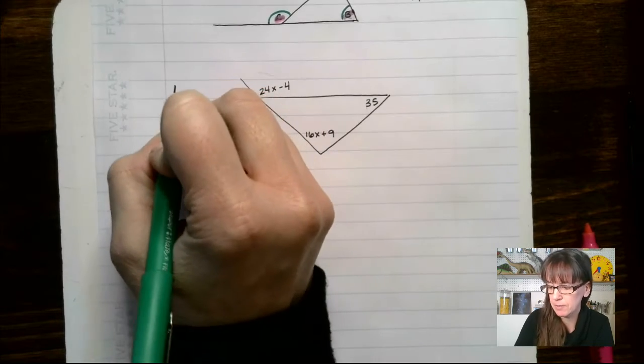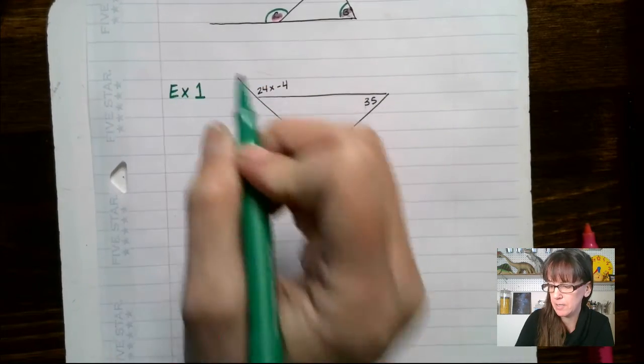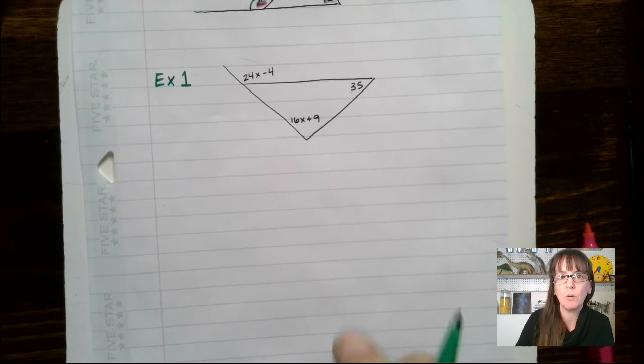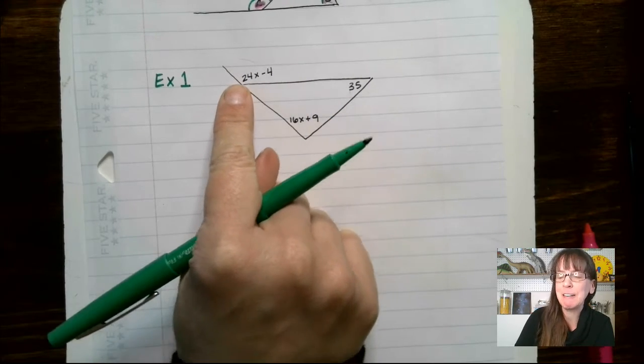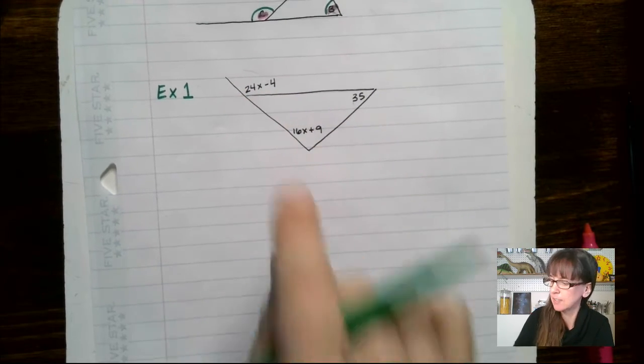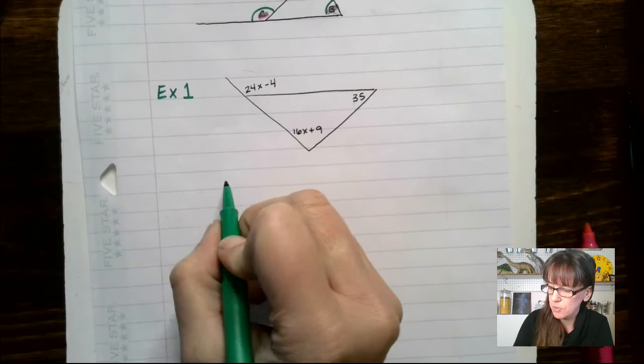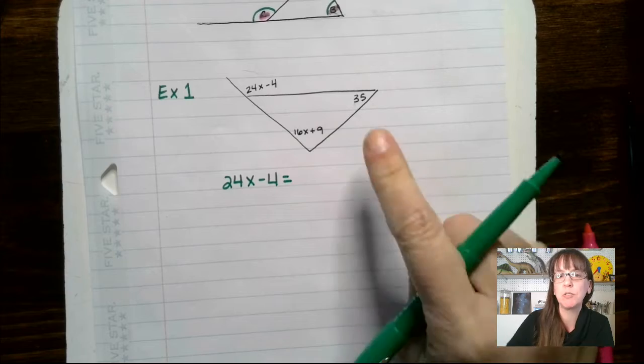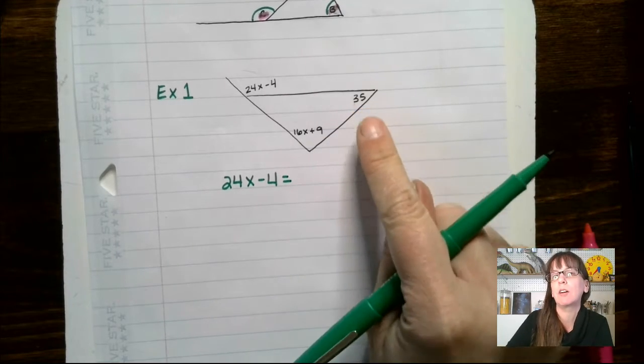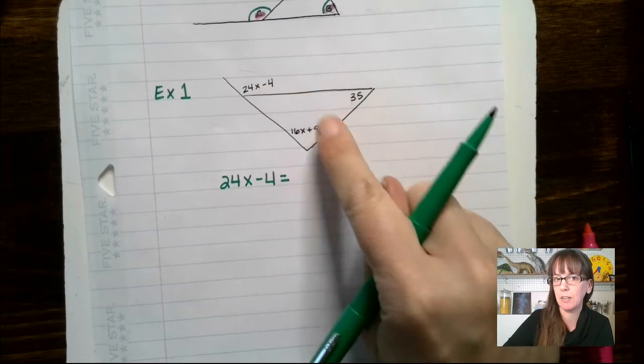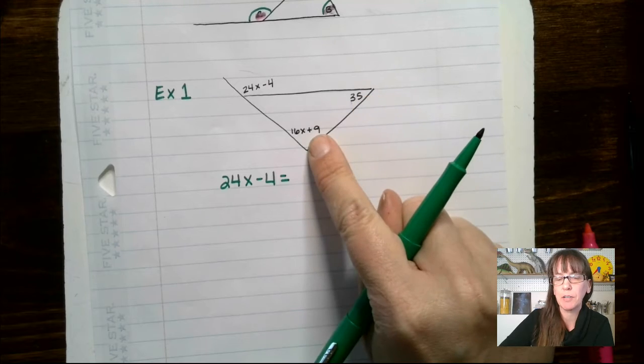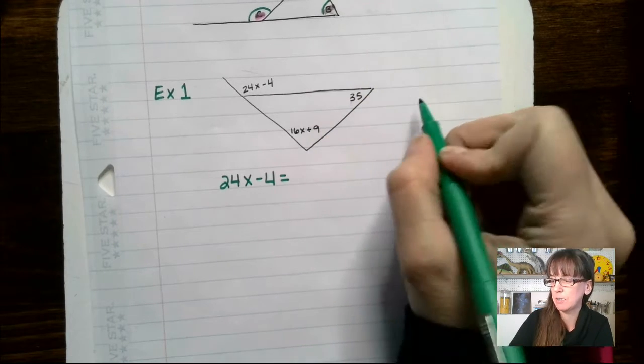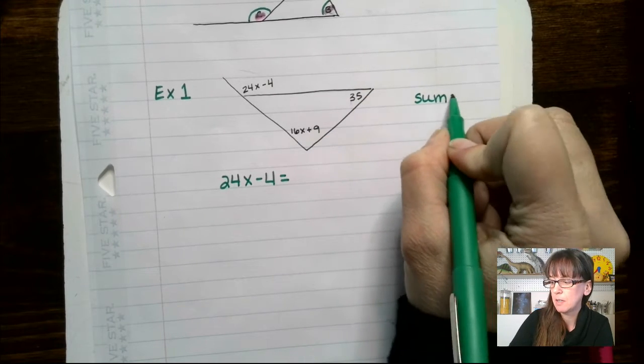Here's our first example. Take a minute, pause the video, write this down. So we have an exterior angle right here, an external angle right here. That's 24x minus 4. That is equal to the sum of the two angles that are opposite that exterior angle. So these two right over here. And remember, sum means addition. So sum equals addition.